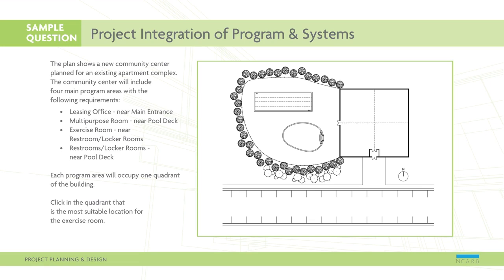Here's a sample question. The plan shows a new community center plan for an existing apartment complex. The community center will include four main program areas: leasing office near main entrance, multi-purpose room near pool deck, exercise room near restrooms/locker rooms, and restrooms/locker rooms near pool deck. Each program area will occupy one quadrant of the building. Click in the quadrant that is the most suitable location for the exercise room.